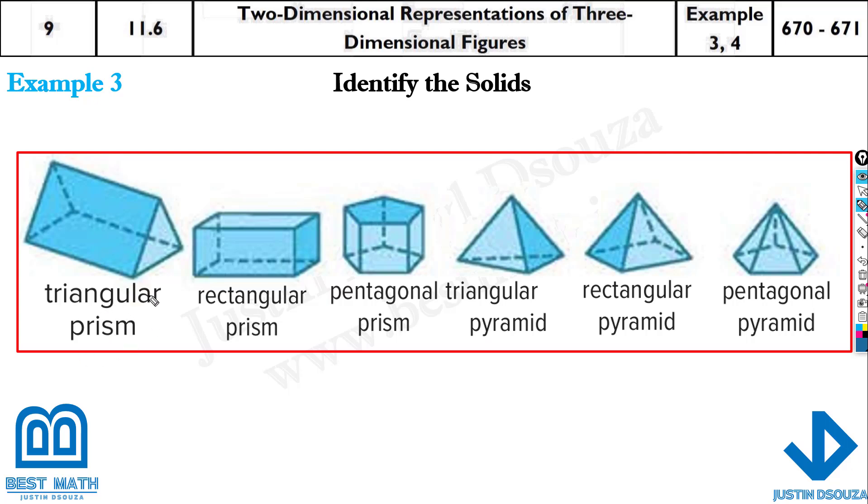You can see this is called a triangular prism. Triangular prism why? This is rectangular, it's just based on the shapes. If you look, this is triangle, this is rectangle, this is pentagon.